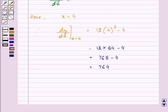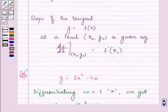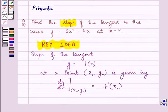So, the slope of the tangent is equal to 764 and this is the required answer to the given question. Hope you understood the solution well. Do remember the key idea and have a nice day ahead.